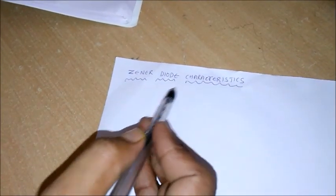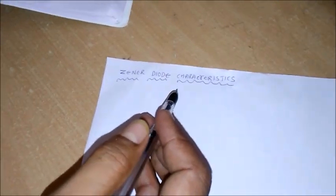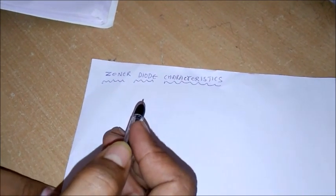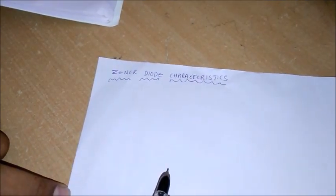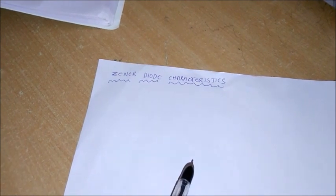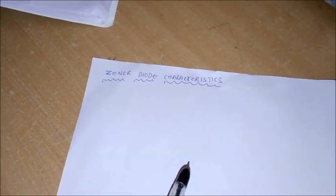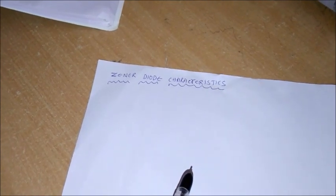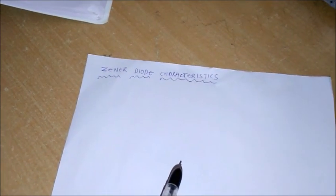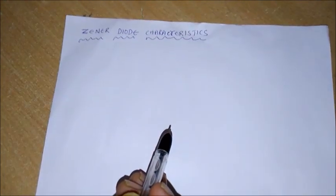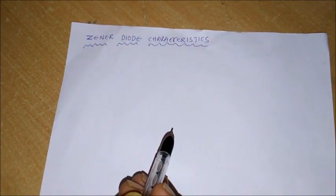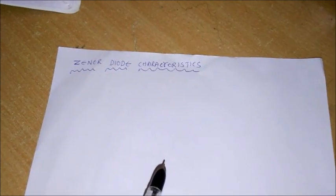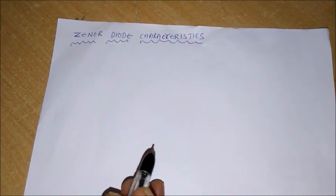We will see about the Zener diode characteristics. Before going to implement practically, we will see how a Zener diode is going to be useful. A Zener diode is a heavily doped PN junction diode, especially made to operate in the breakdown region. A PN junction diode normally does not conduct when reverse biased, but if the reverse bias is increased at a particular voltage, it starts conducting. This voltage is called the breakdown voltage.